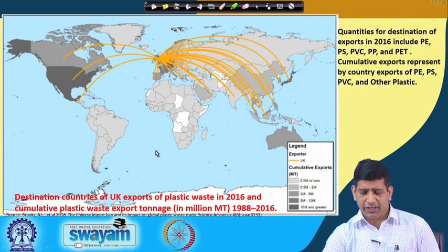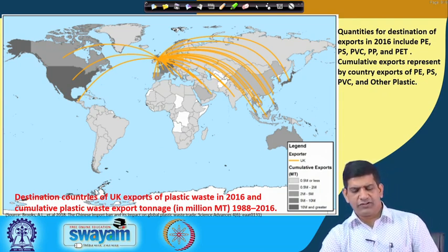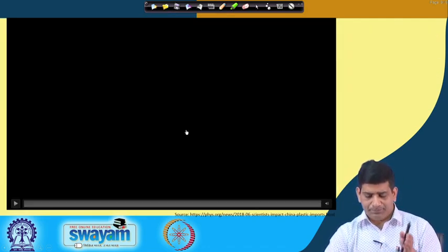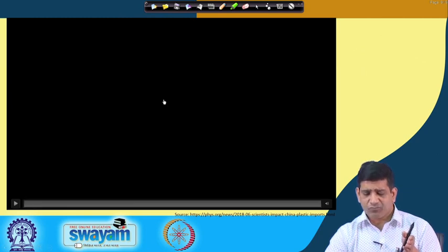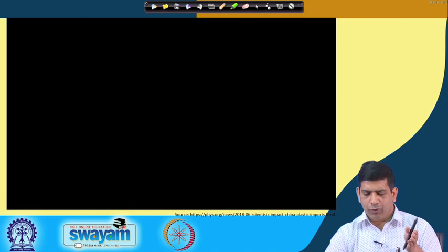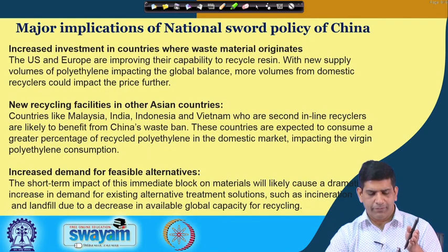A similar example applies to the UK — without spending too much time on it, you can see from the UK that waste is going to several places around the world for management. We will now look at a short video on what different scientists are thinking about the impact of plastic waste imports, and then we will discuss it.